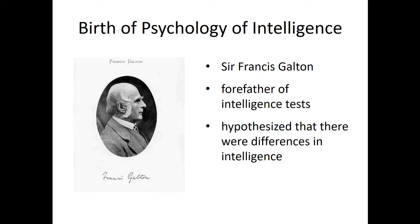In 1865, Sir Francis Galton began to study heredity after reading his cousin's publication. His cousin was Charles Darwin, who published the Origin of Species. Galton was convinced that higher intelligence was caused by superior qualities passed down to children through heredity.